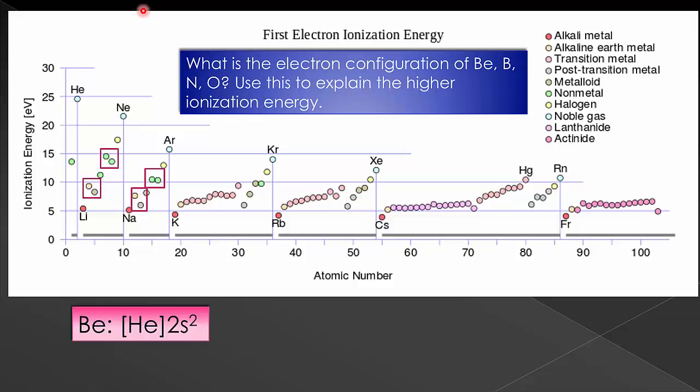All right, let's start with beryllium and boron. For beryllium, we have [He]2s². For boron, we have pretty much the same thing, but now we have an extra electron in the P.